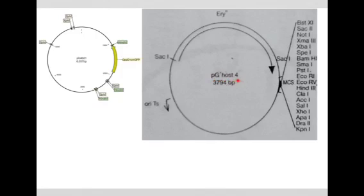So it involves the use of the vector called pGhost4. What it has is, first of all, multiple cloning sites — a bunch of restriction enzyme sites. It's also got erythromycin resistance that we use for selecting the plasmid. But in terms of the long-term goal, the important thing is this OrETS, the origin of transfer that is temperature sensitive.